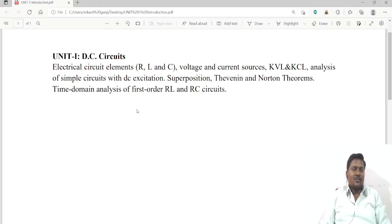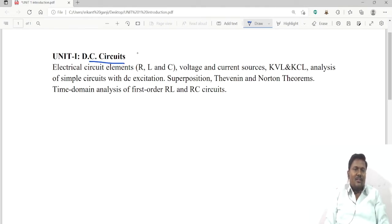Coming to the introduction to DC circuits, the first unit in our basic electrical engineering subject. The same concepts are there in previous electrical circuits. DC means direct current. The first generation was DC by Thomas Alva Edison, who invented the bulb and the DC generator.